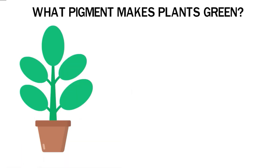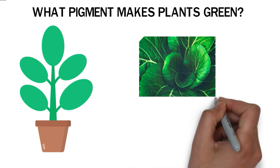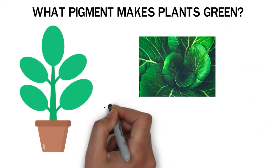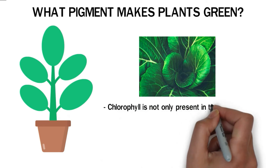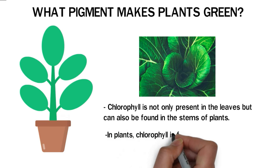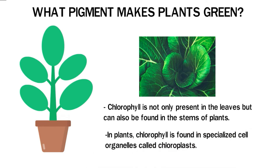Chlorophyll achieves this green color because it does not absorb green wavelengths. When light strikes the surface of the leaves, chlorophyll is not only present in the leaves but can also be found in the stems of plants. In plants, chlorophyll is found in specialized cell organelles called chloroplasts.